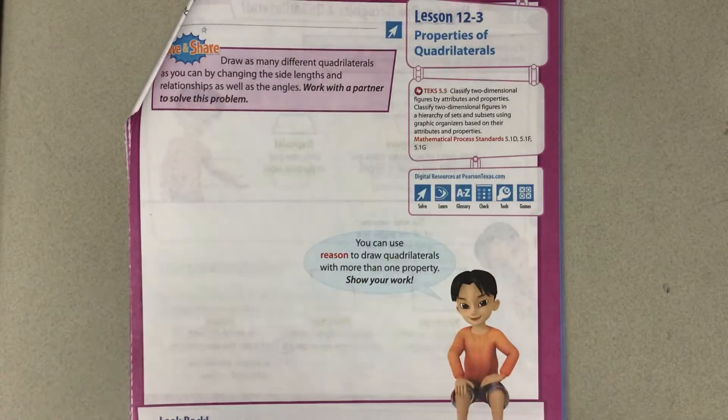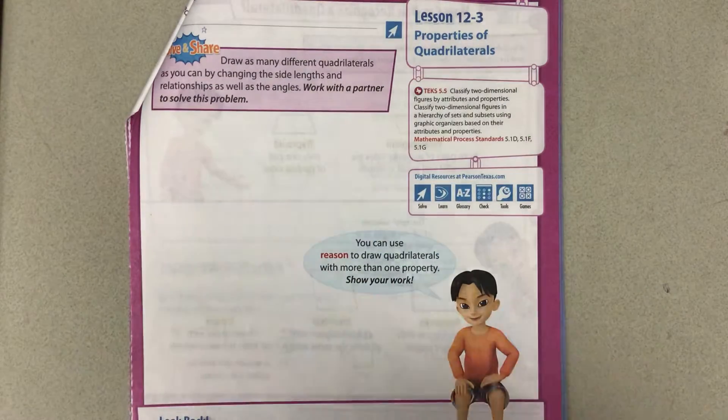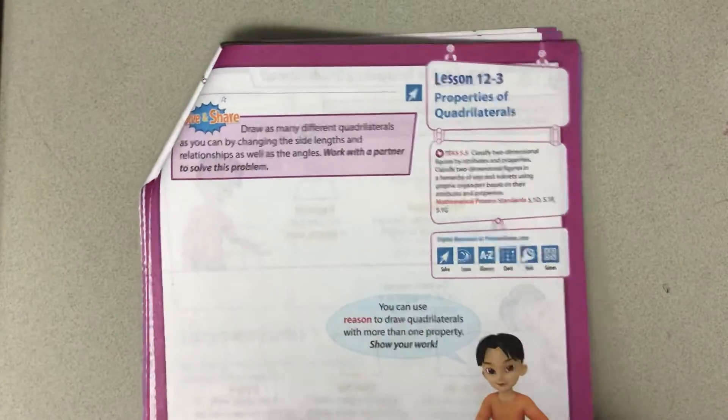Lesson 12-3, Properties of Quadrilaterals. We're going to flip the page to where we can look at our lesson page. We're on page 640.